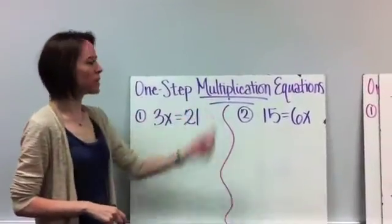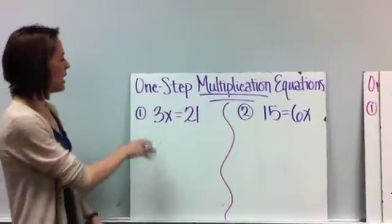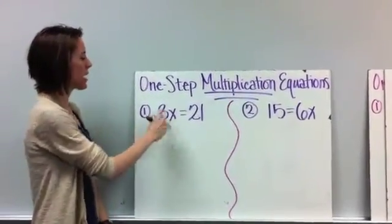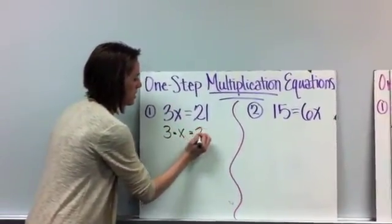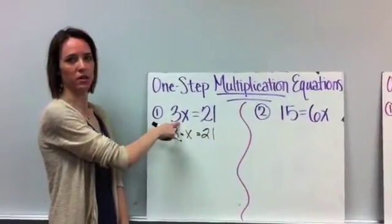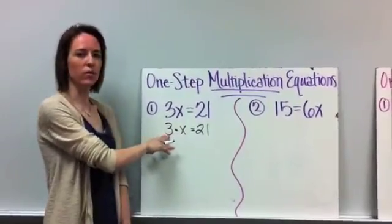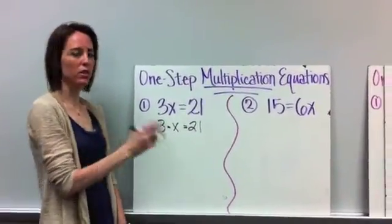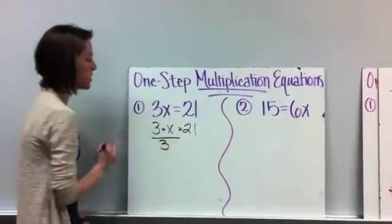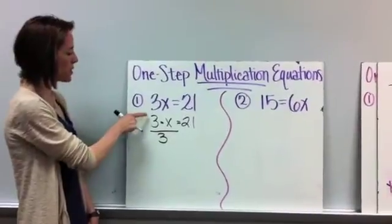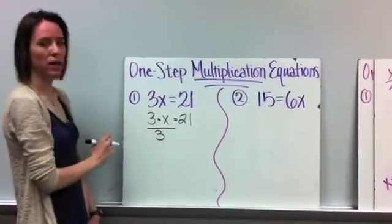All right, so now we're going to do one-step multiplication equations. And the ones before, we were either adding or subtracting from the variable. And here you notice 3 sitting right next to that x. That's the same thing as 3 times x equals 21. Don't forget that this means multiplication. So remember we talked about inverse operations. Since we're multiplying here, in order to get rid of what's next to the variable, you have to do the inverse operation. And you guys all know that the opposite or inverse of multiplication is division. Because what happens here is if you have 3 and you divide it by 3, you get 1, and that basically takes care of this and leaves x by itself.